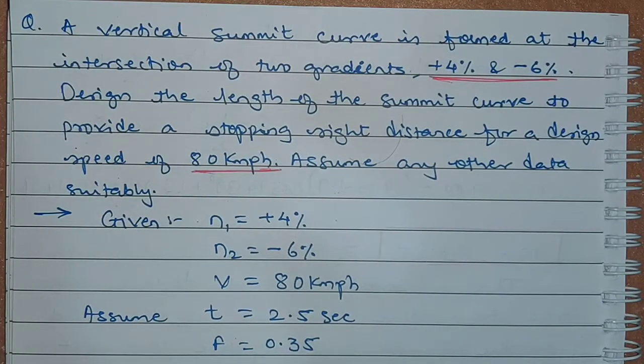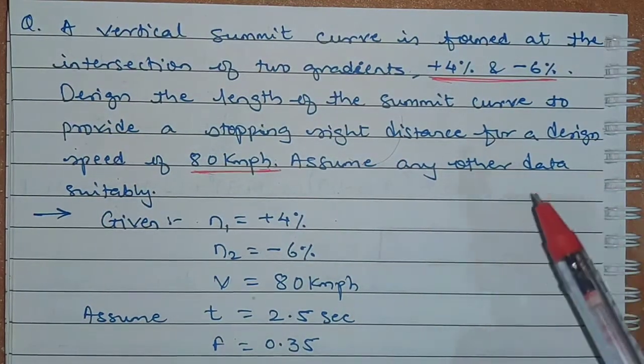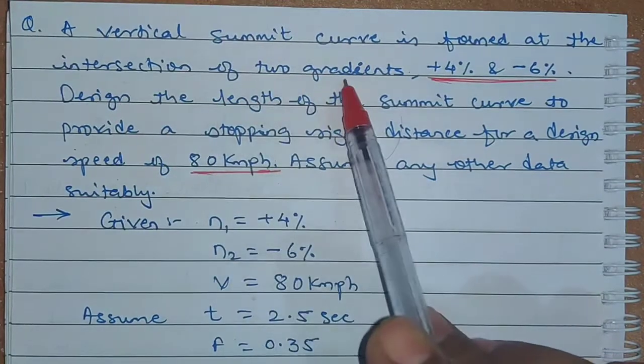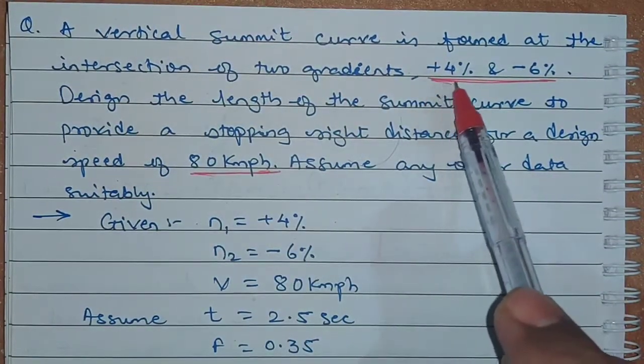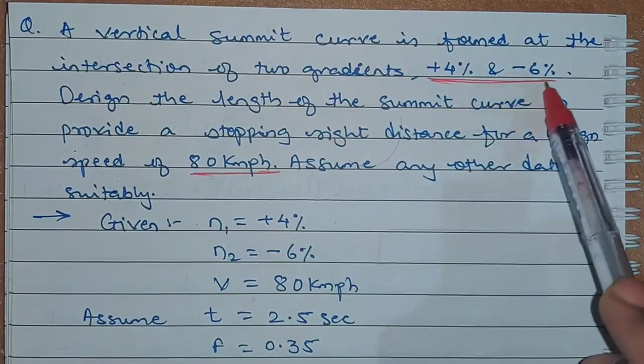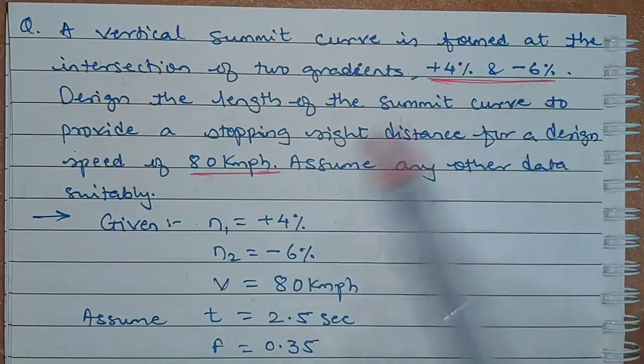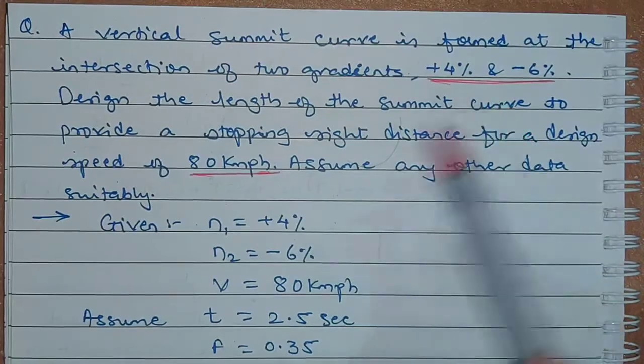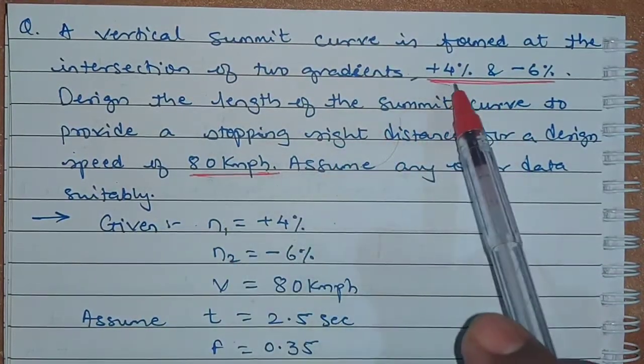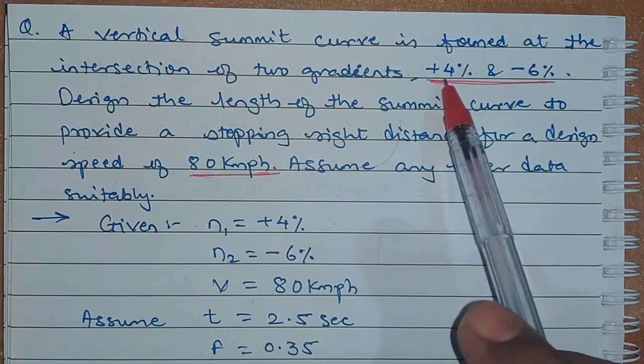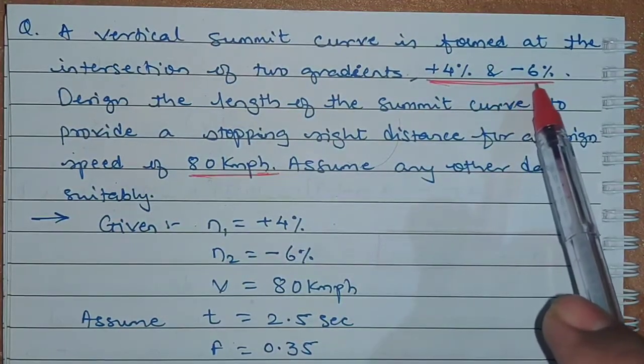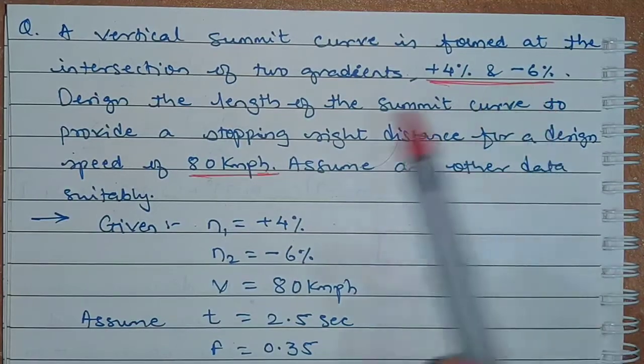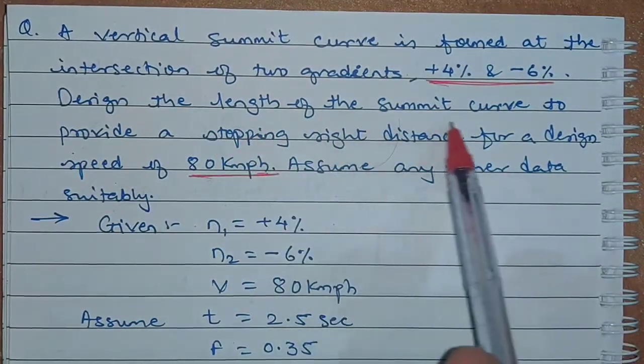The statement of the first numerical is as follows. A vertical summit curve is formed at an intersection of two gradients, plus 4% and minus 6%. That means we have a vertical summit curve with an ascending portion of plus 4% gradient and then a descending gradient of minus 6%.